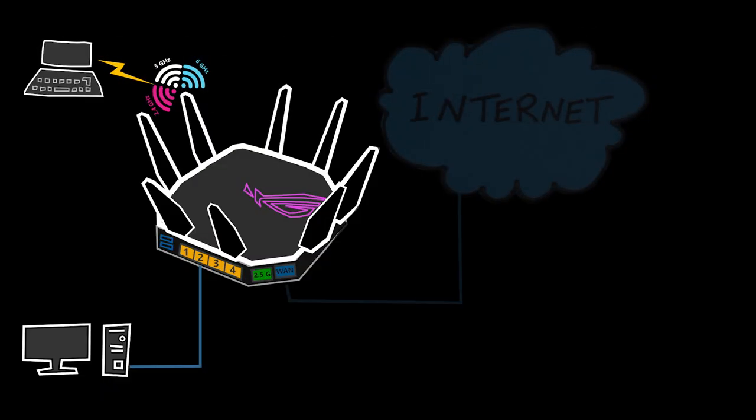There are other ways to access a local network from the outside, for example by using a VPN connection, but VPN is not exactly the same and it can be more complicated because you need a VPN server. Port forwarding is simpler, doesn't require a server, and most home wireless routers can easily do that.